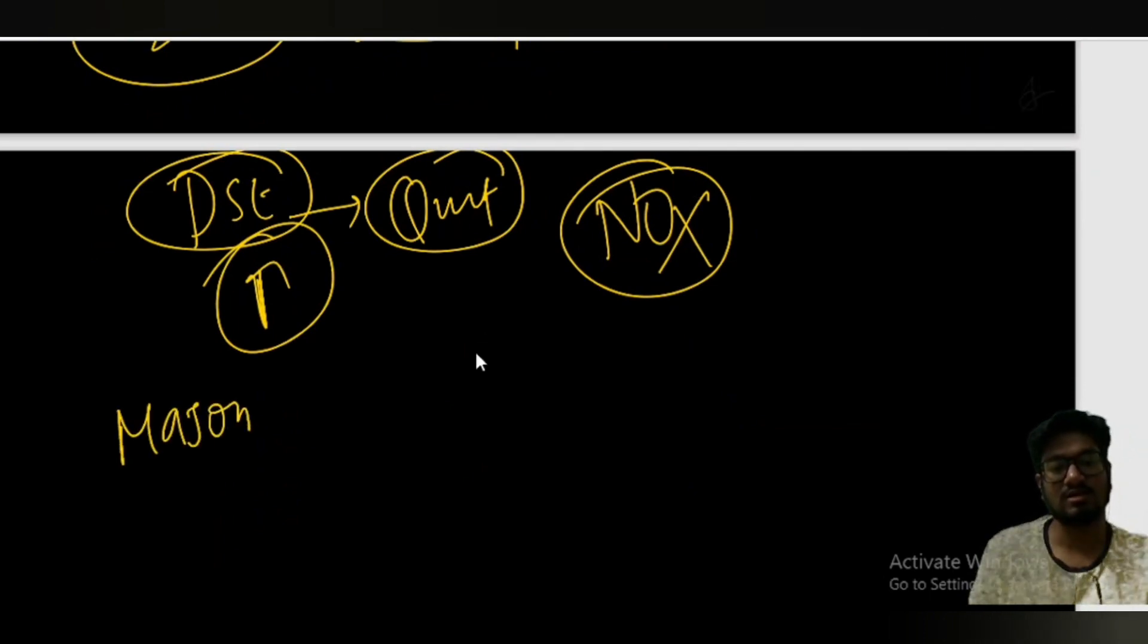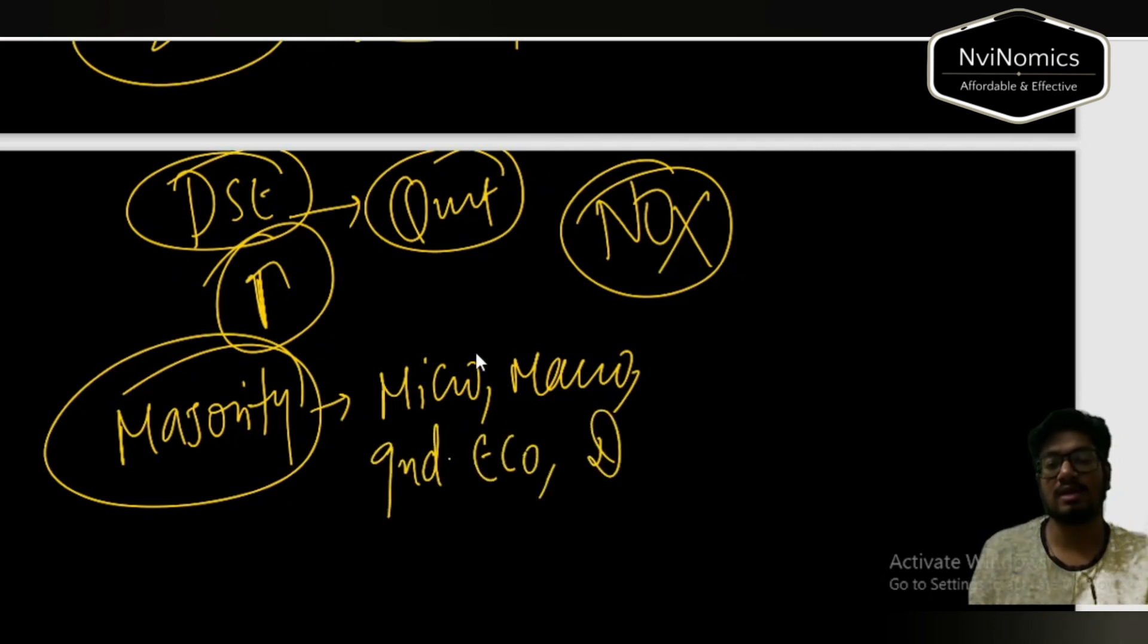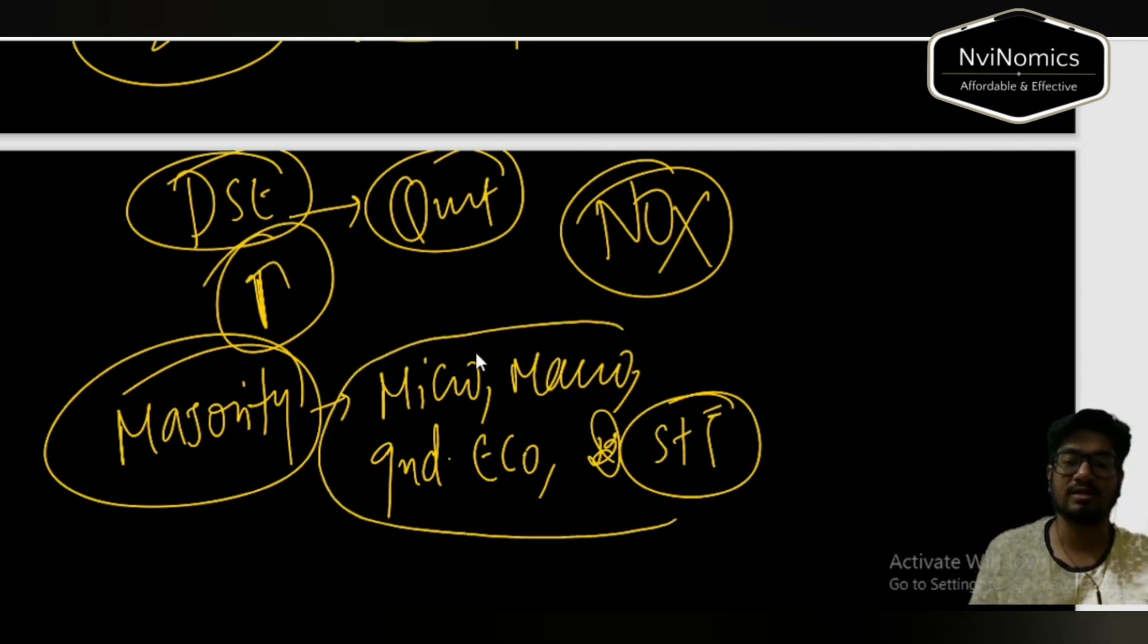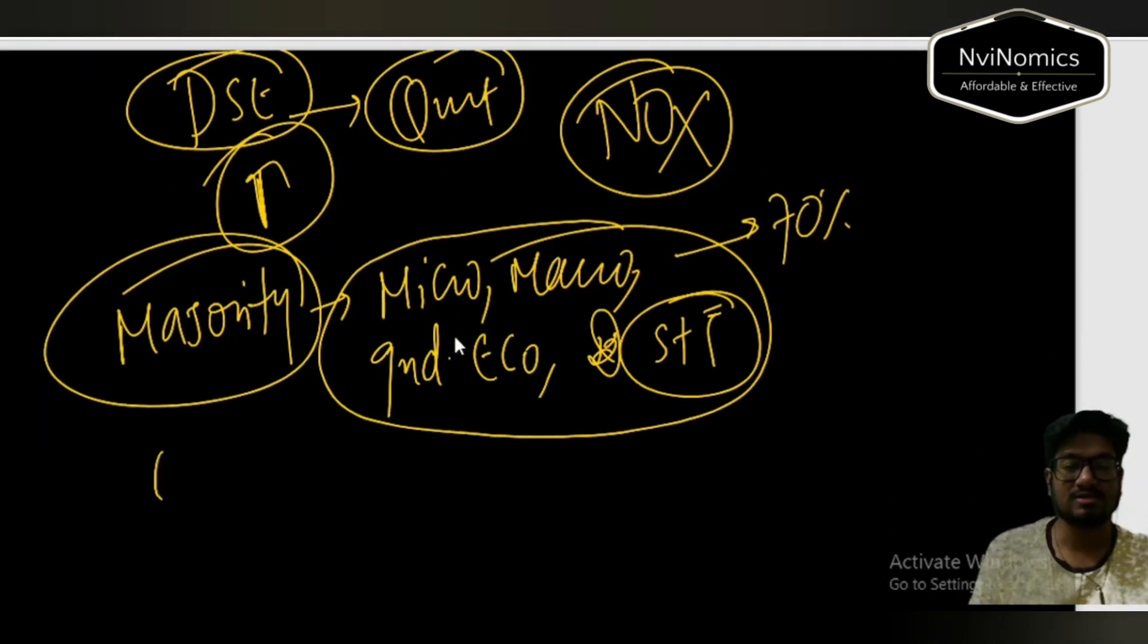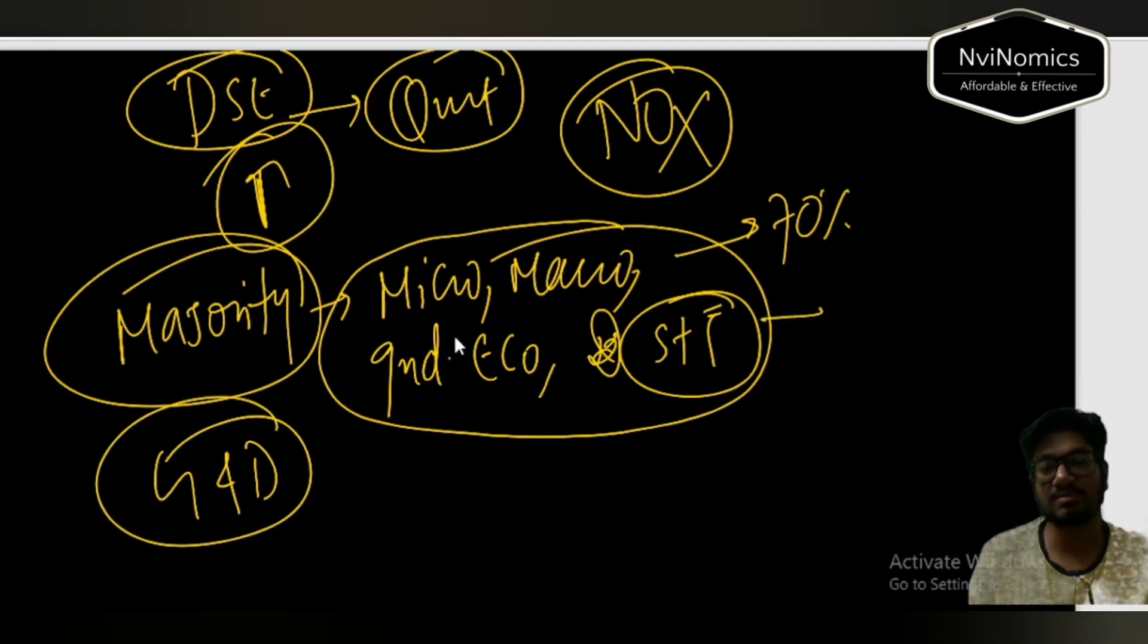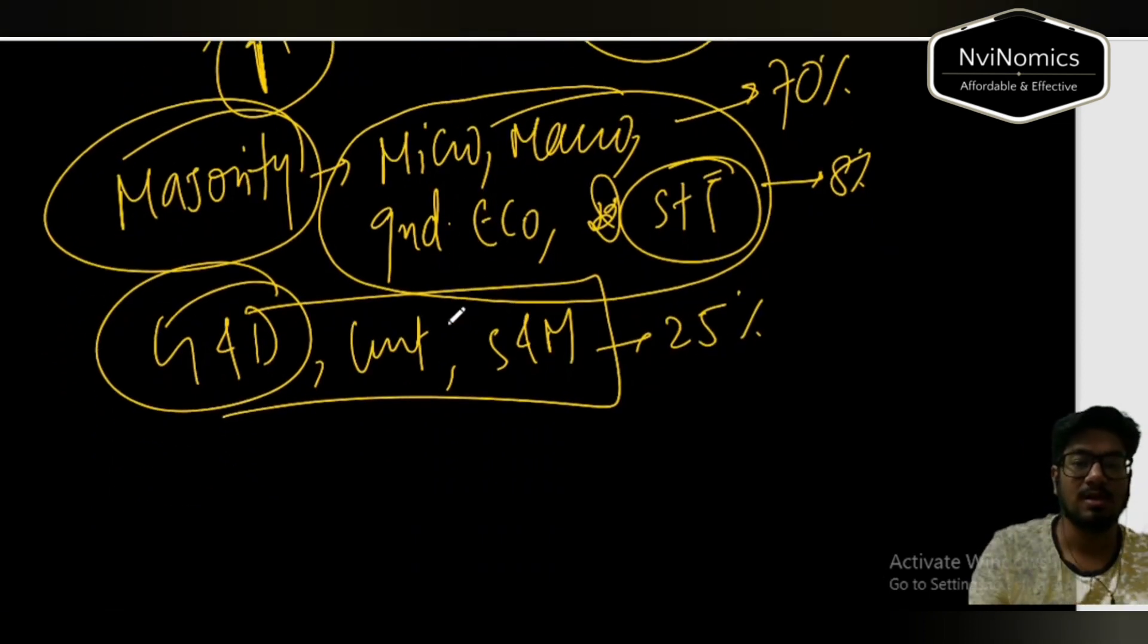If you see the majority areas - micro, macro, Indian economy, then developments with relatively less questions, then stats and math. These together may cover nearly 70 to 80 percent. It's current affairs, schemes, stats and math - all this together. So this will be the pattern of paper you can expect.